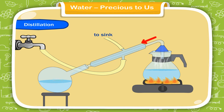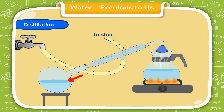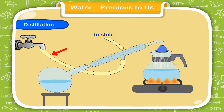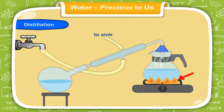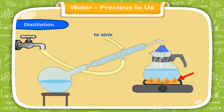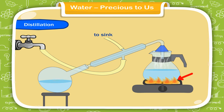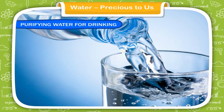To get pure water using distillation, heat water containing impurities in a distillation flask. When the water evaporates, allow the water vapor to pass through a condenser. When the water vapor cools, pure distilled water collects in the condenser. Keep the condenser cool by running water. Insoluble impurities settle at the bottom of the flask.